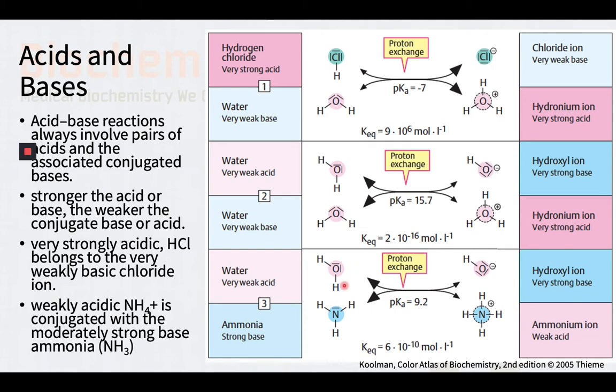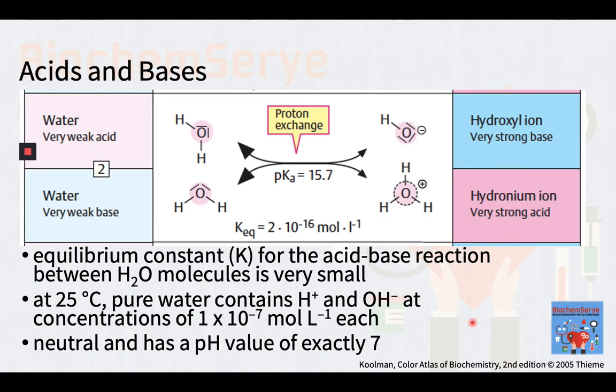For example, the very strongly acidic hydrogen chloride belongs to the very weakly basic chloride ion. The weakly acidic ammonium ion is conjugated with the moderately strong base ammonia. Moving on, the equilibrium constant abbreviated as K for the acid-base reaction between water molecules is very small. For conciseness, we will not be going into the computation of the ion product of water or the product of the hydrogen ion and hydroxyl ion concentrations. Suffice it to say that at 25 degrees Celsius, pure water contains hydrogen ions and hydroxyl ions at concentrations of 1 times 10 to the negative 7 moles per liter each.